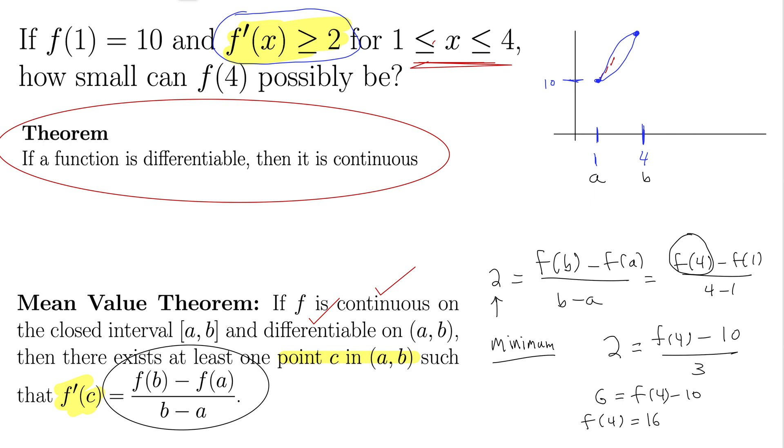It might be bigger than that, but the smallest it can possibly be is 16. Any smaller, and we're going to have a derivative somewhere in there that is less than 2, which the original problem states can't happen.